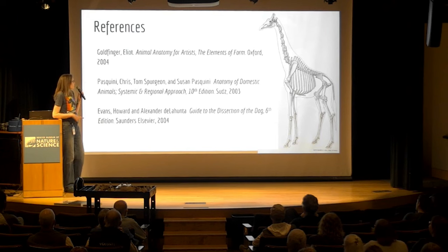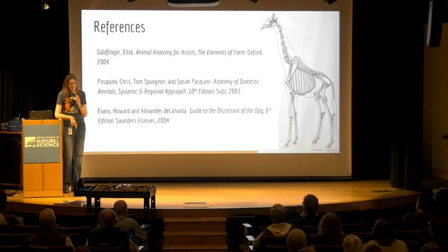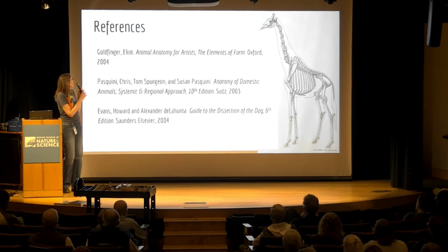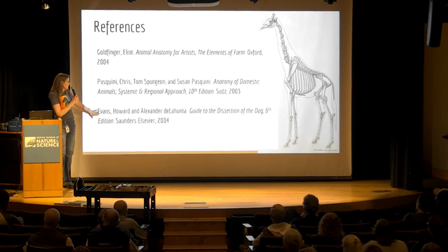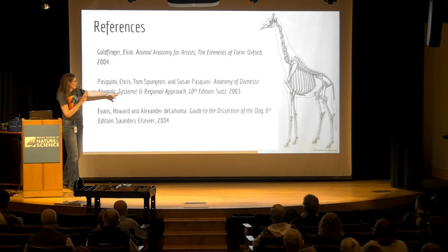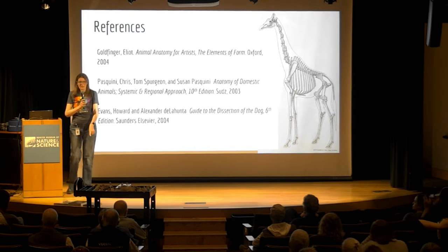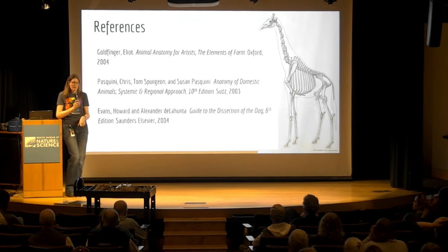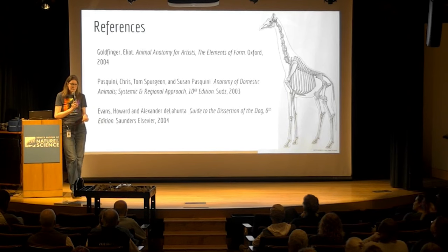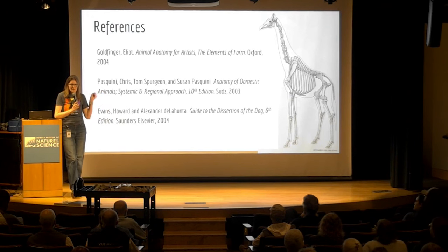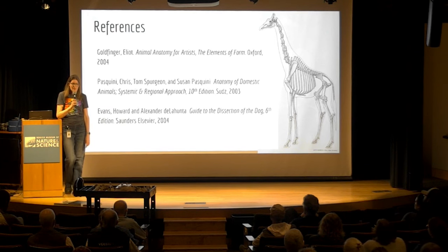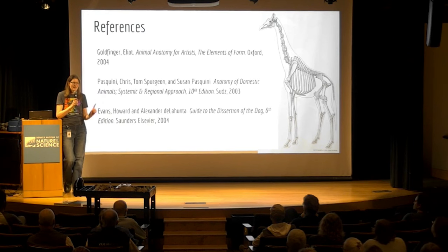These are the three books I really use specifically for this presentation. Evans's Guide to the Dissection of the Dog and Anatomy of Domestic Animals are two that I've had since I was in school and still rely on pretty regularly. Animal Anatomy for Artists is something that's going to join my library very soon — they're really cool books, a little bit spendy because they're more on the textbook end of the spectrum, but if you're interested in anatomy they're really fun.